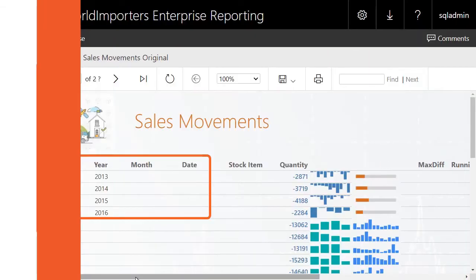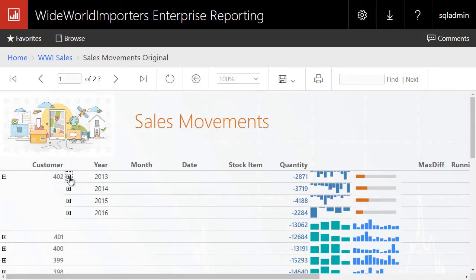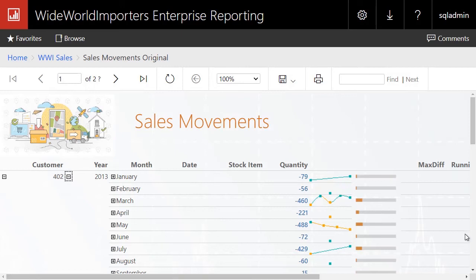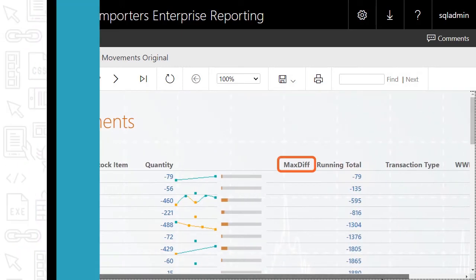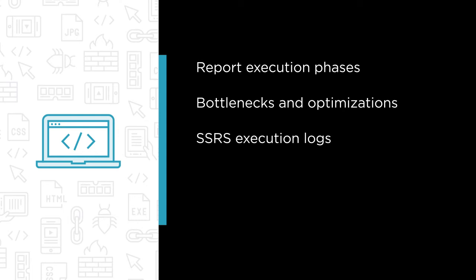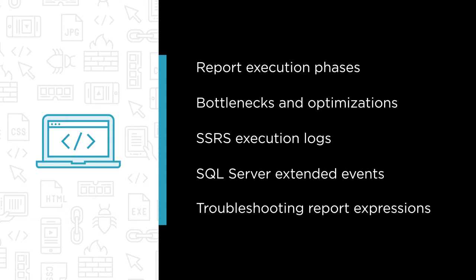In this course, we are going to explore how to troubleshoot four different report problem types with hands-on examples. Some of the major topics that we will cover include report execution phases, bottlenecks and optimizations, SSRS execution logs, SQL Server extended events, and troubleshooting report expressions.